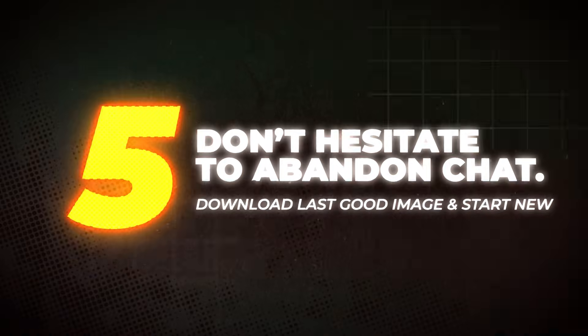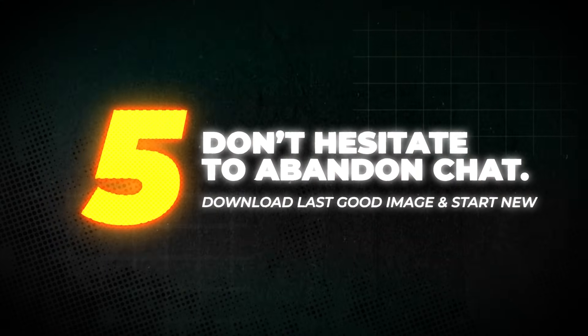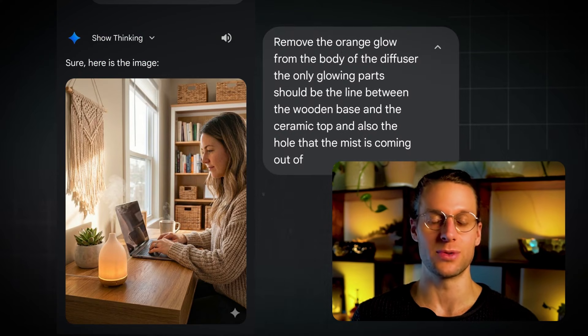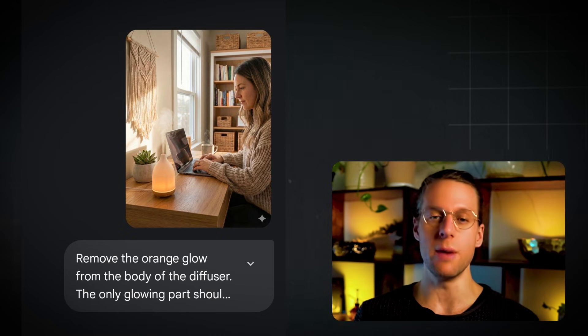Which leads me to my fifth tip: abandon chat. A lot of times you just have to abandon the chat. What I'll do is download the most recent good image before the chat went off the rails — like in this case where I was chatting back and forth with the AI to try to change things, and it ended up doing some freaky stuff: it turned the product black. So I went back in time, downloaded an image, re-uploaded it to a new chat, and started with new prompts — and I ended up getting the result I wanted, as you can see here.